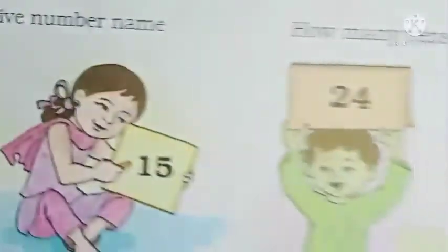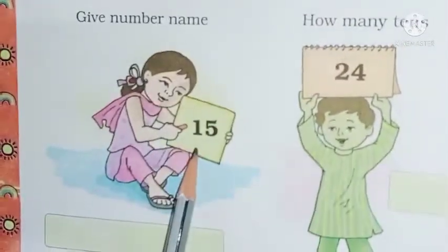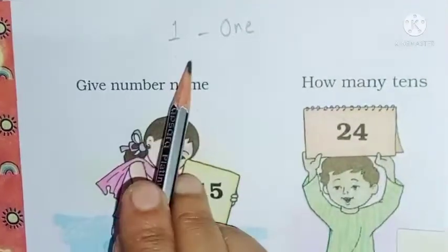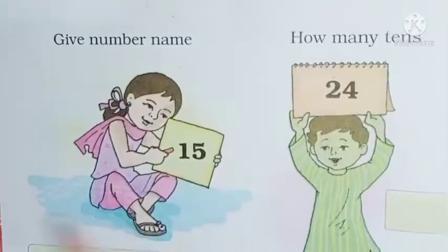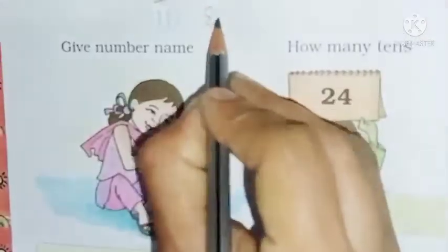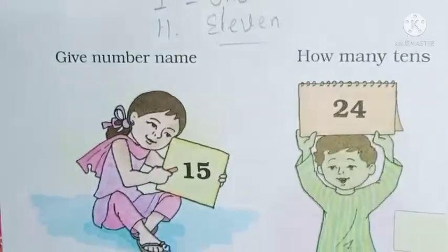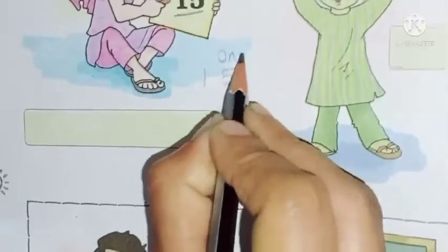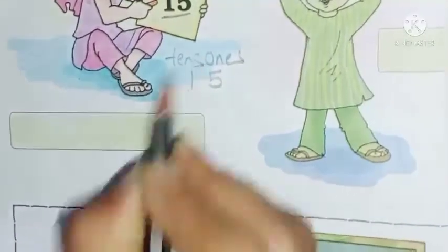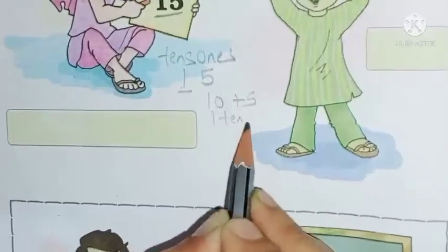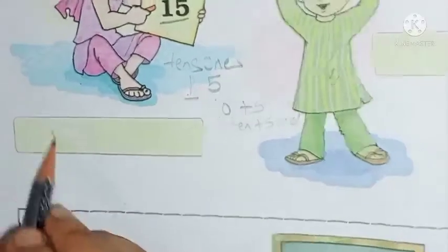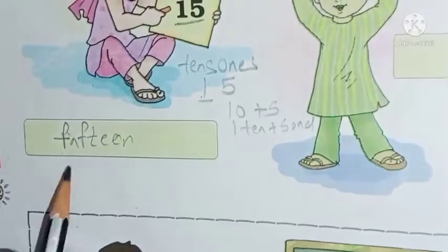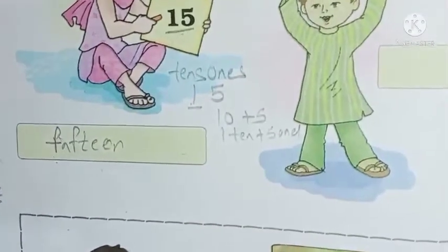Next, page number 132 — give the number name. So children, number name means we see the number and we have to give it a name. Like in counting you write 1, 2, 3, 4, 5, 6, 7, 8, 9, 10 — so after 10 what do you write? 11. We covered 11 to 20 in the last chapter. So look, what is this? 15. What is 15? Our 5 is the 1s and 1 is the 10s. So 10 plus 5 — 1 ten and 5 ones. So the number name is: 15 — F-I-F-T-E-E-N, fifteen.